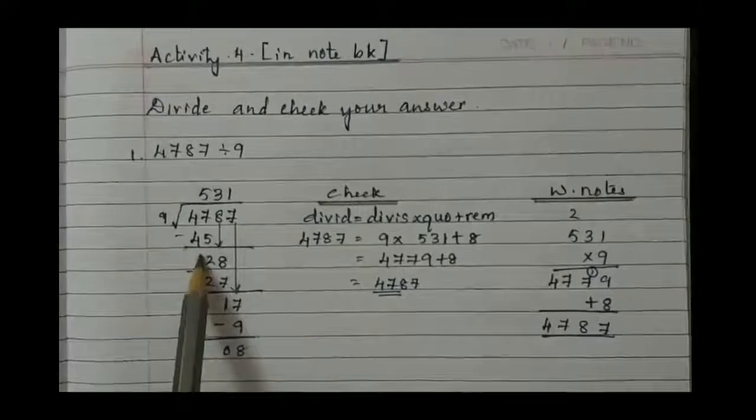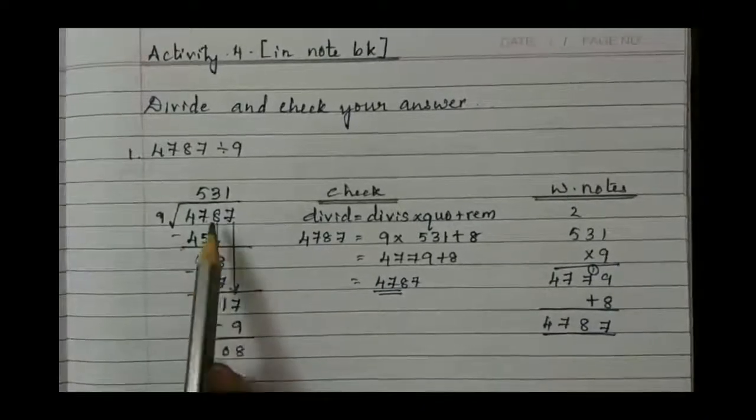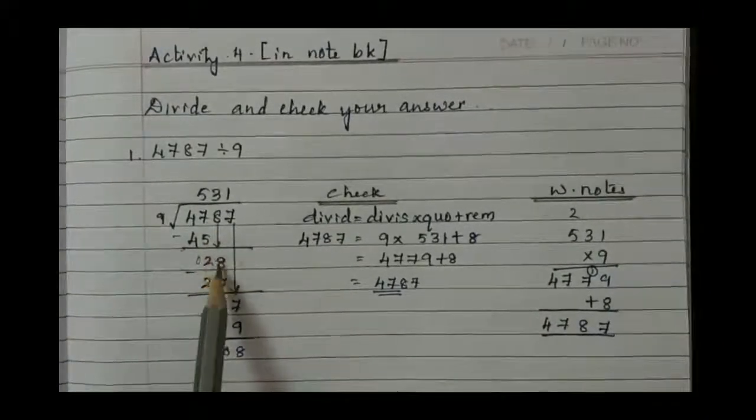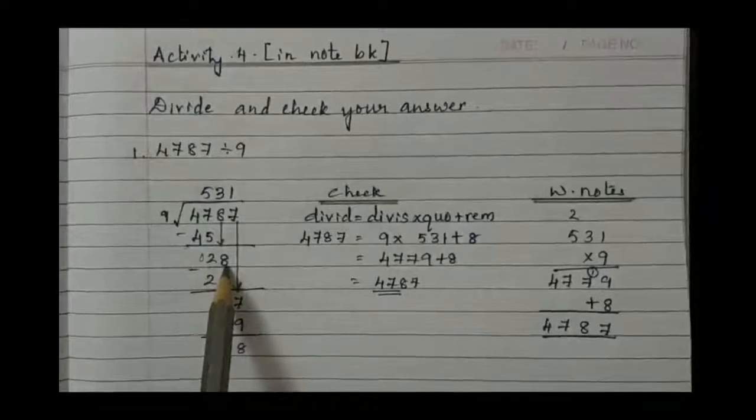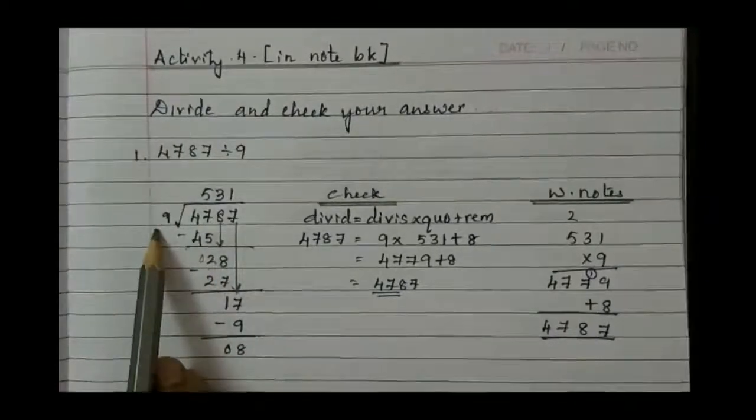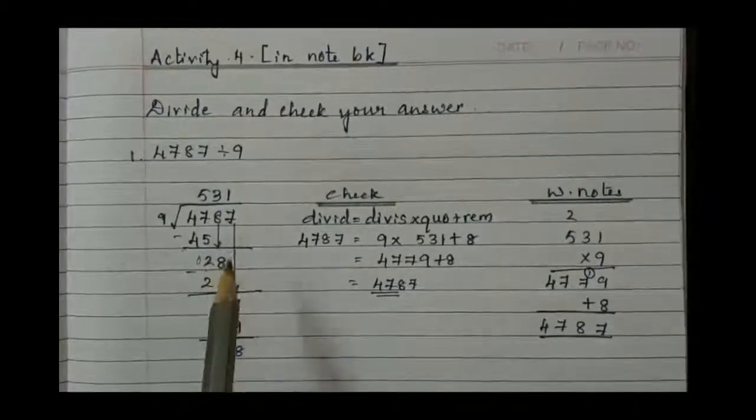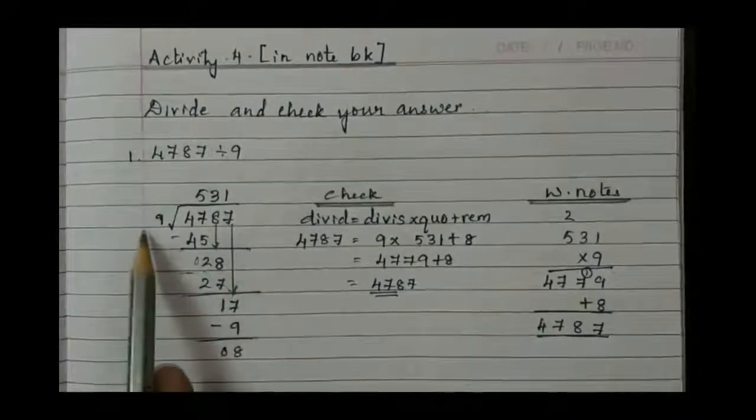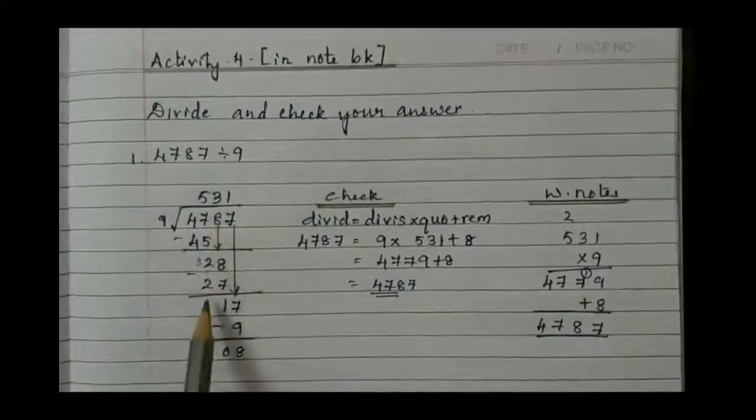Now subtract: 7 minus 5 is 2, 4 minus 4 is 0. Then bring the 8. So 2 and 8 becomes 28. In table 9 when do we get 28? No we don't get it, so we take less than it. 9 times 3 is 27.